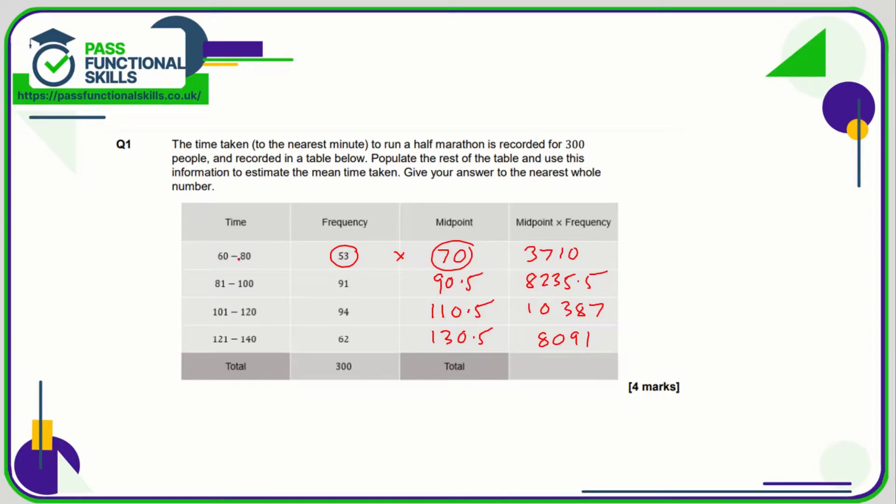Now they could have all run it in 60 minutes and one second or 79 and a half minutes. So what we're doing is we are assuming that all of them took 70 minutes, which is exactly halfway between the lower and the upper limit. Now if we're working out the mean time, we want the total time divided by the number of runners.